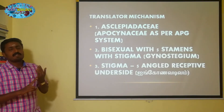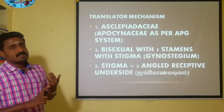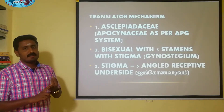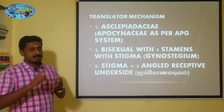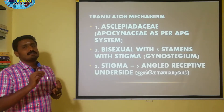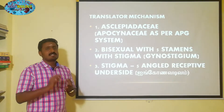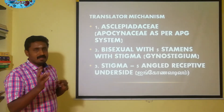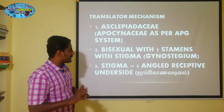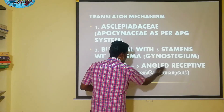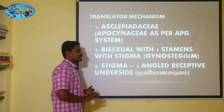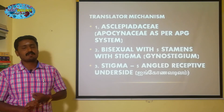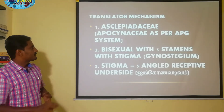So we have three points so far: first, the plant belongs to the Asclepiadaceae family; second, we define the gynostegium; third, it is star-shaped and pentagon-shaped with a five-angled receptive underside. Five-angled is the key word.